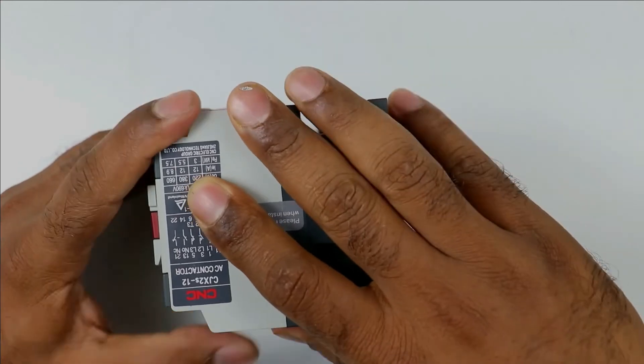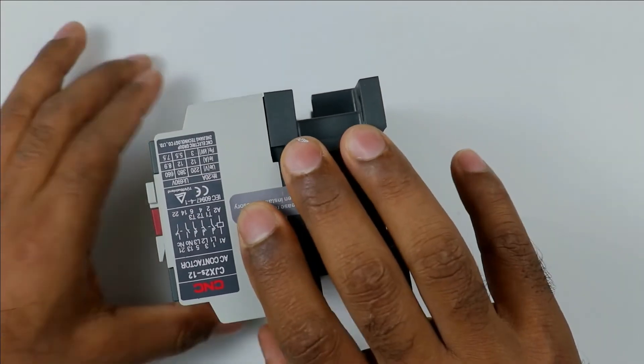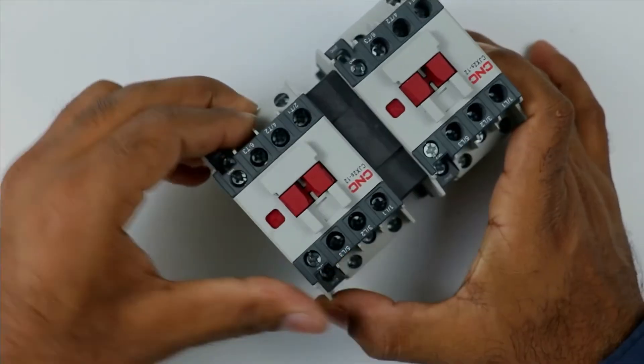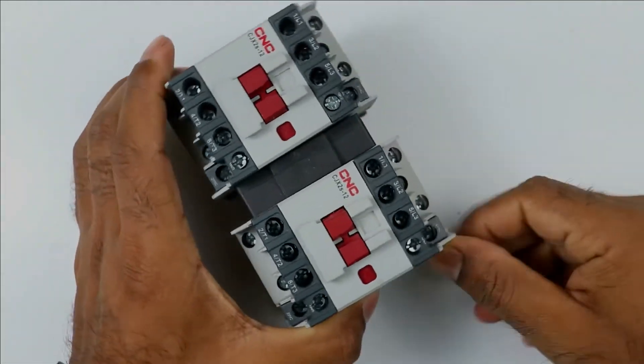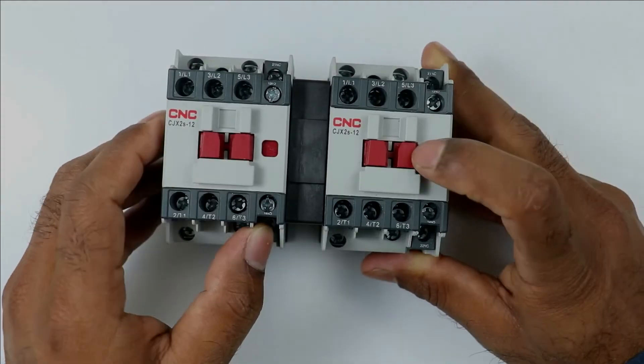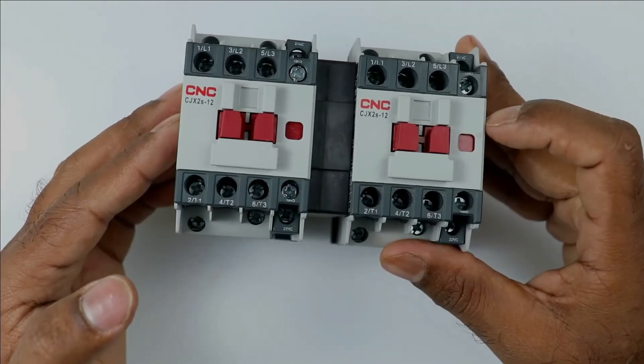I mounted both of the contactors on contact. I will still not remove my hands on contactor to check whether it is perfectly interlocked or not. Both the contactors are making proper movement. So we mount it perfectly.